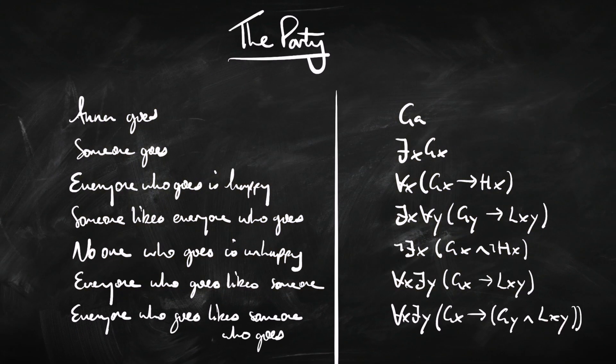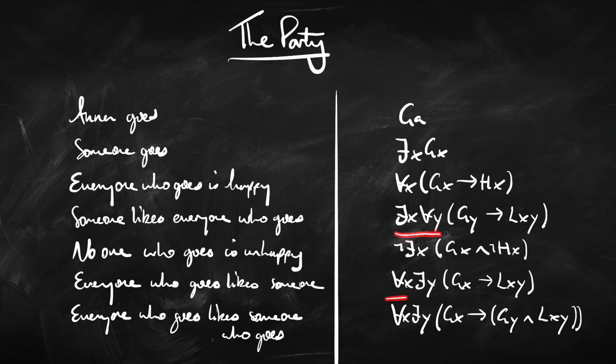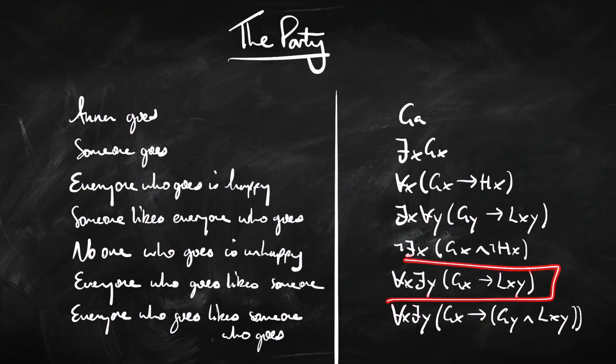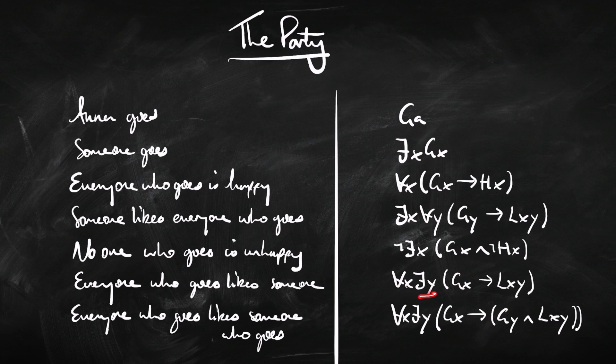Translating from English into logic — and reading logic back in English — can be tricky when there are quantifiers, especially two in a row. As a general rule of thumb, write the quantifiers in the order they appear in the English. For instance, 'someone followed by everyone' gives existential then universal; 'everyone followed by someone' gives universal then existential. And if you're reading a logical sentence back into English, read the quantifiers out from left to right.